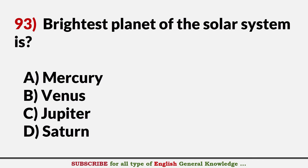Brightest planet of the solar system is? Answer B. Venus.